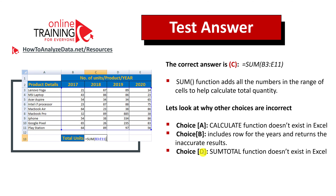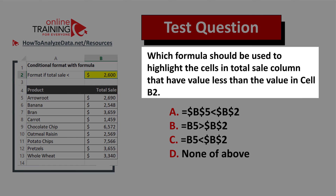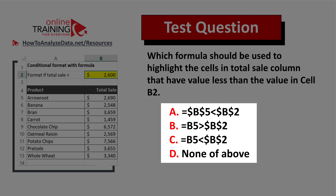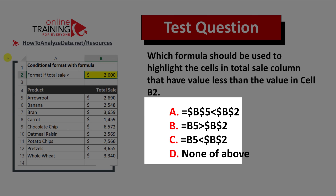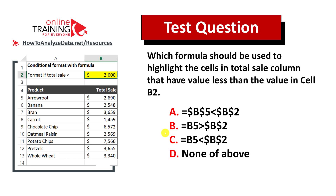Hopefully you've nailed this question and now know how to answer similar problems in the test. Here's a question for you to try on your own — I have full confidence you can solve it. Which formula should be used to highlight the cells in the total sale column that have a value less than the value in cell B2? You have four different choices. Please pause the video, look at the data on the left, and post your answer in the comment section so I can give you feedback.